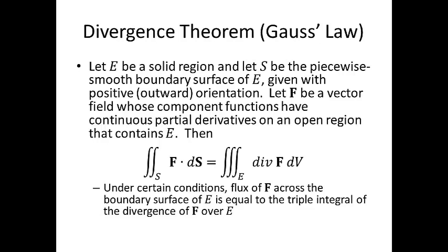Then, the surface integral of the vector field is equivalent to the triple integral of the divergence of F dV. In other words, under certain conditions, the flux of F across the boundary surface of E is equal to the triple integral of the divergence of F over E.